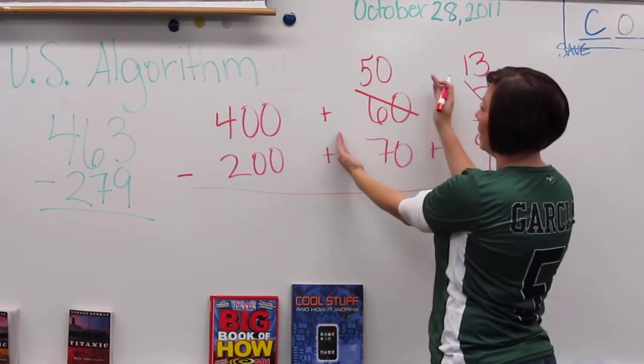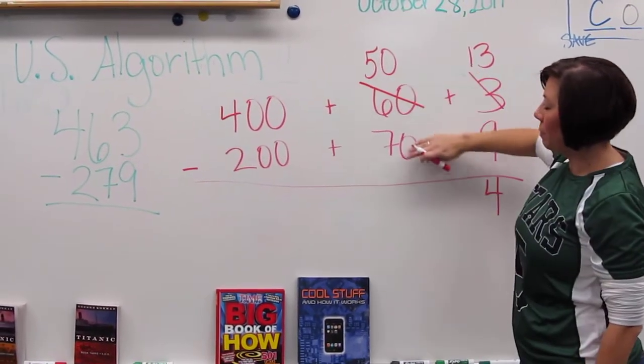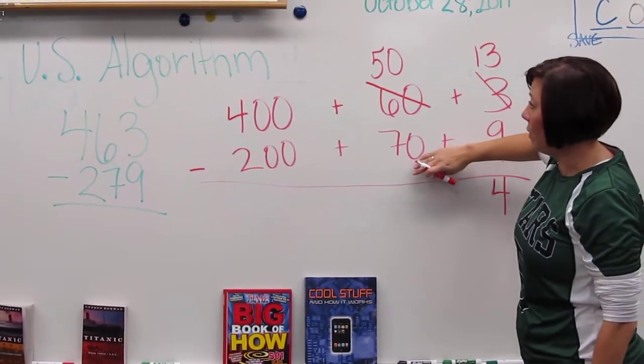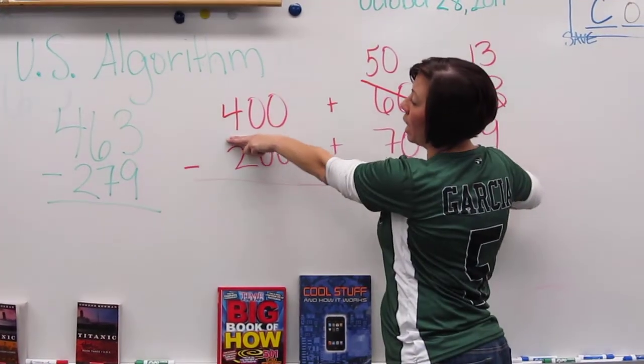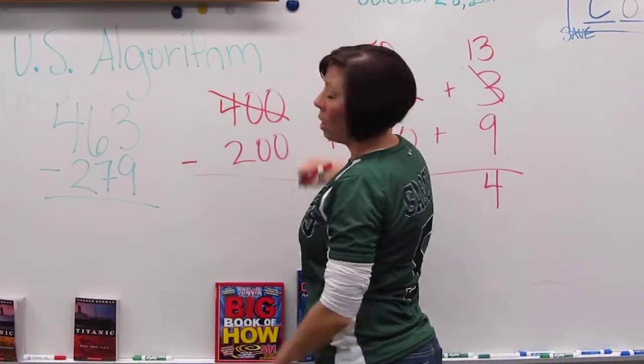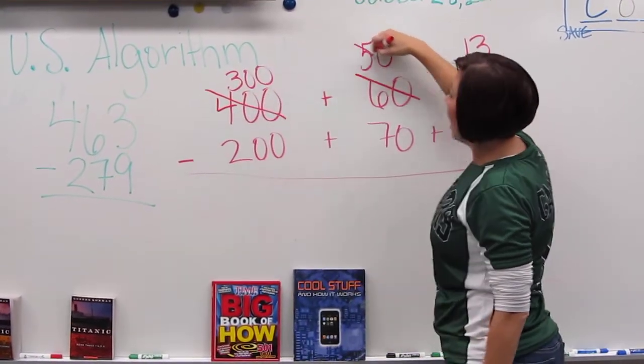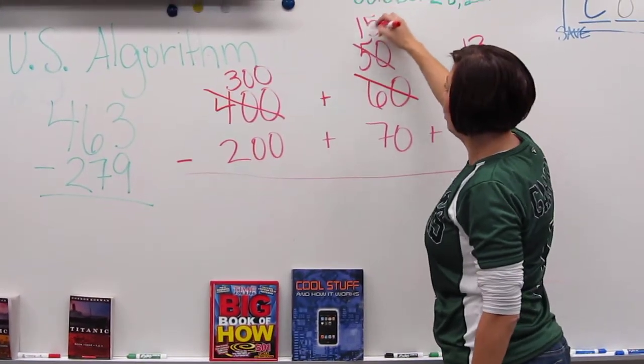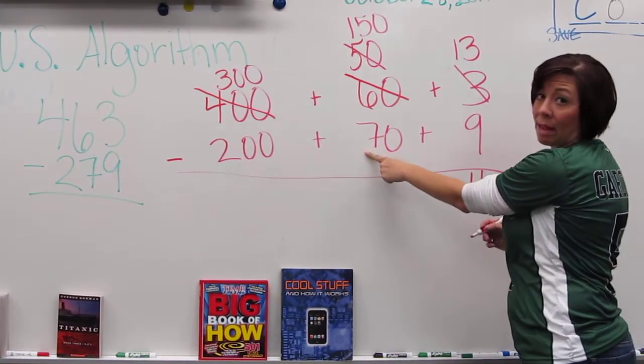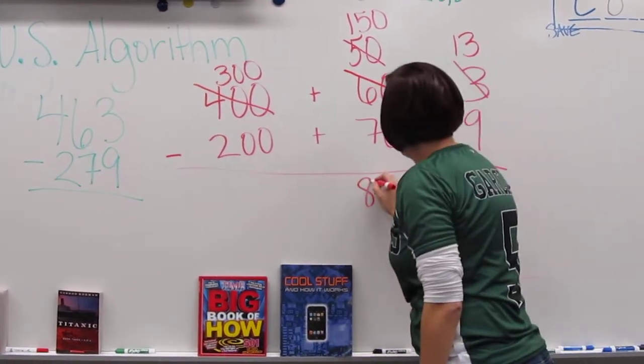Then they look at the tens column. 50 minus 70 won't work, they don't have enough so they're going to have to borrow from the hundreds column. They borrow 100 from 400 and they have to add it on to their 50 here. 150. 150 minus 70 gives them 80.